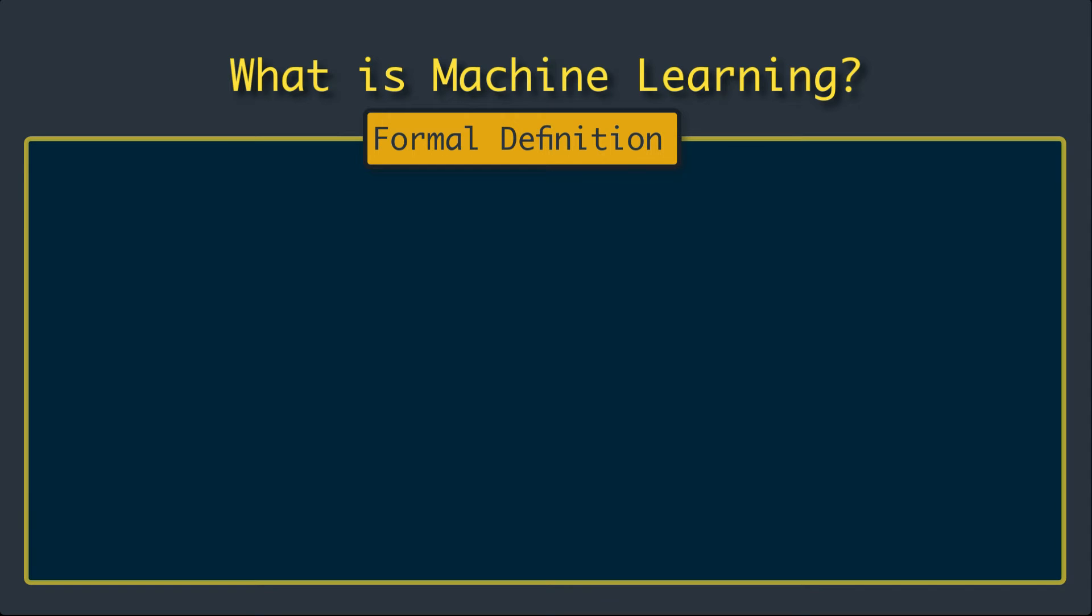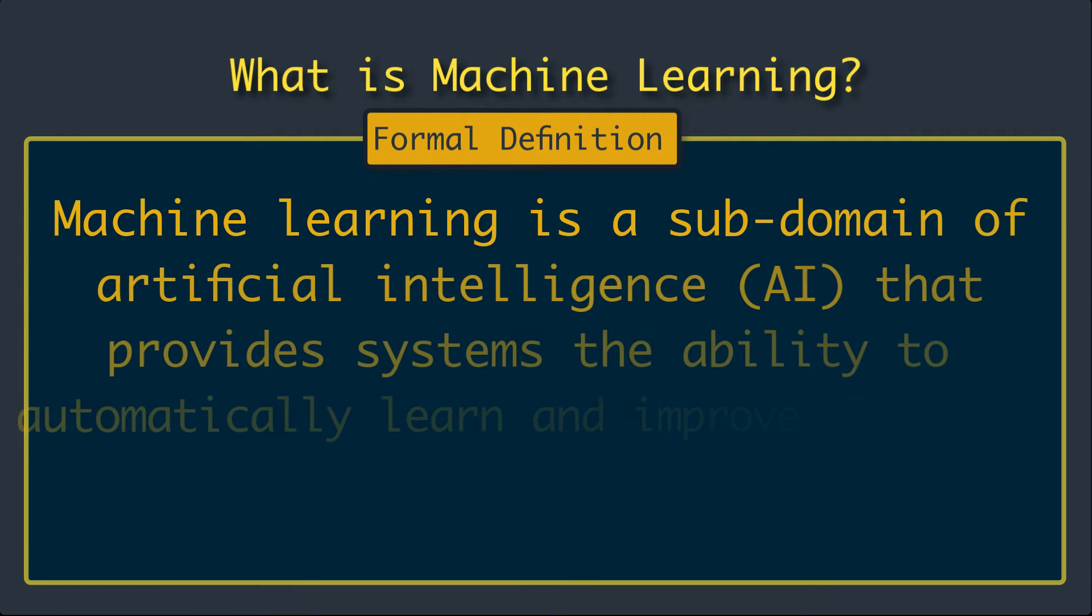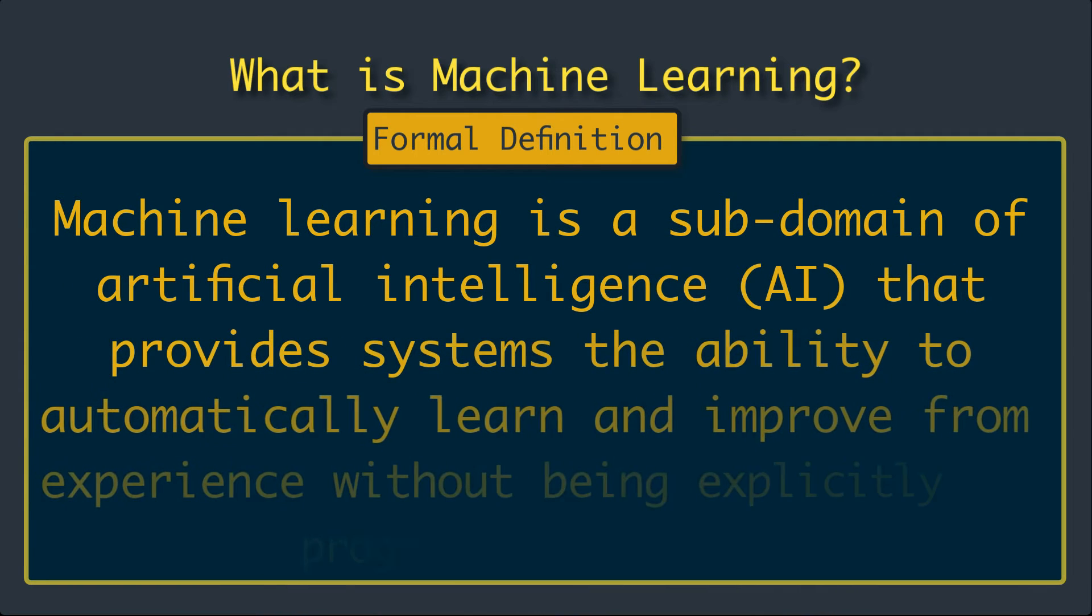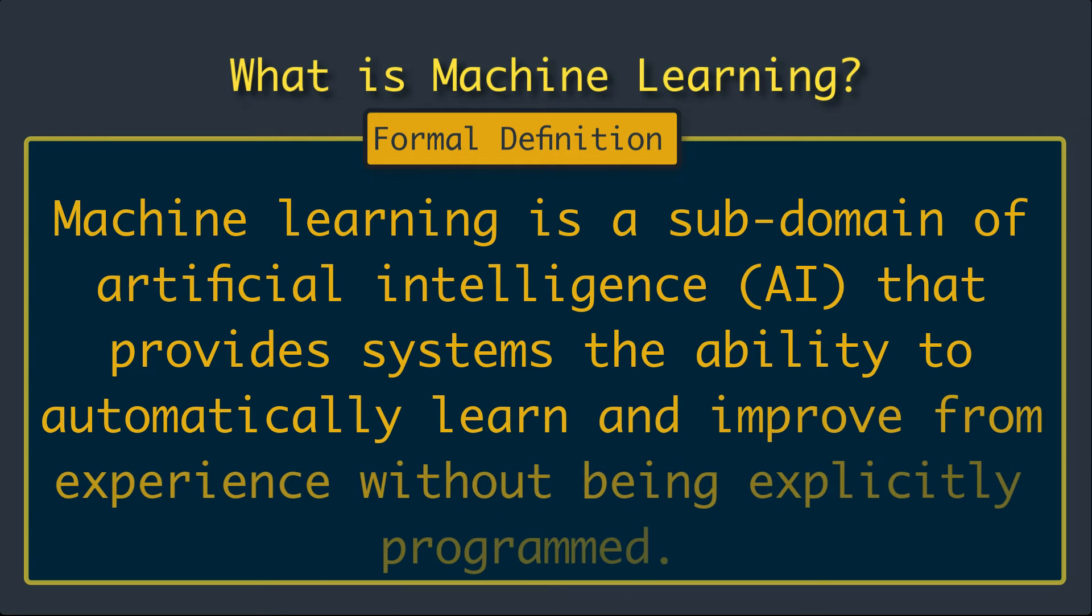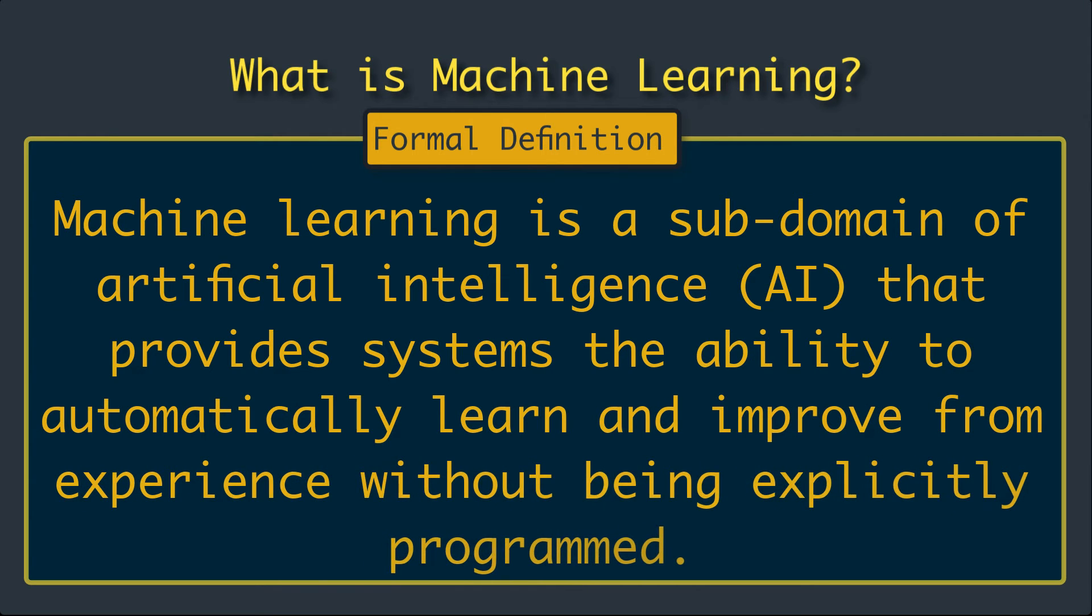But if we combine the common stuff all agreed upon, the definition of machine learning is something like: machine learning is a sub-domain of artificial intelligence that provides systems the ability to automatically learn and improve from experience without being explicitly programmed. Note some key points here: it's an ability for a system to learn and improve automatically by examples. Keep in mind these key points.